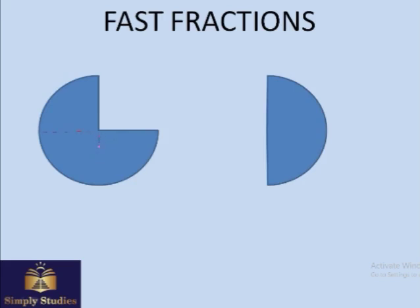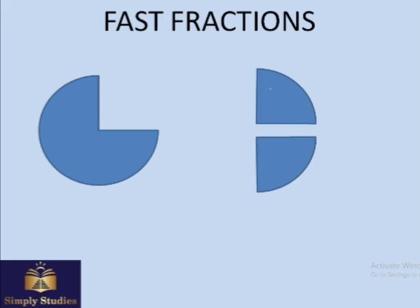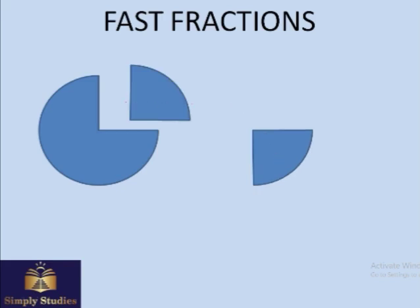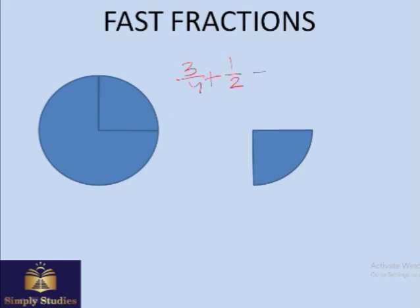This is 3/4. If it is added to one half — to add 3/4 plus 1/2 — this half can be divided into two parts: one quarter plus one quarter. One of those quarters goes toward completing the three quarters into a whole, and the remaining quarter is left over.